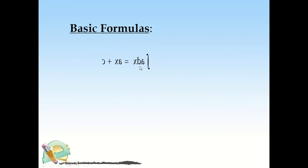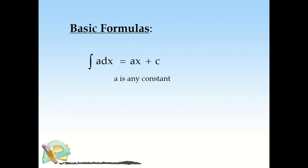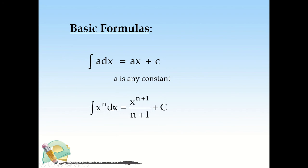For the basic formulas: the integral of a·dx equals a·x + C, where a is a constant. You just isolate the constant a and integrate dx — the integral of dx is just x — then add the constant of integration. The second formula is: the integral of xⁿ dx equals x^(n+1) divided by (n+1), plus C, with the condition that n ≠ −1.